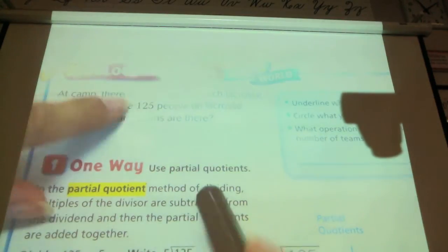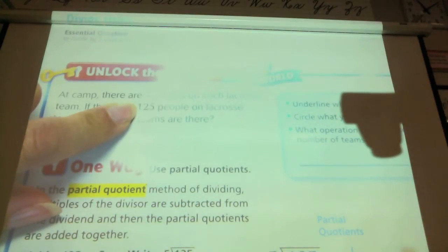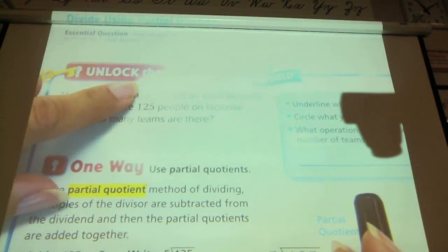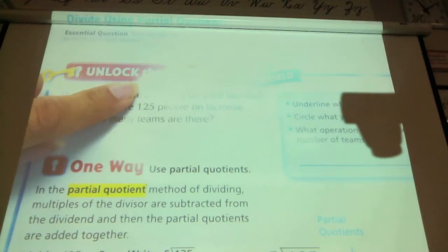So we know there's a total of 125 people, and there's five on each team. So we want to find out how many teams there are.